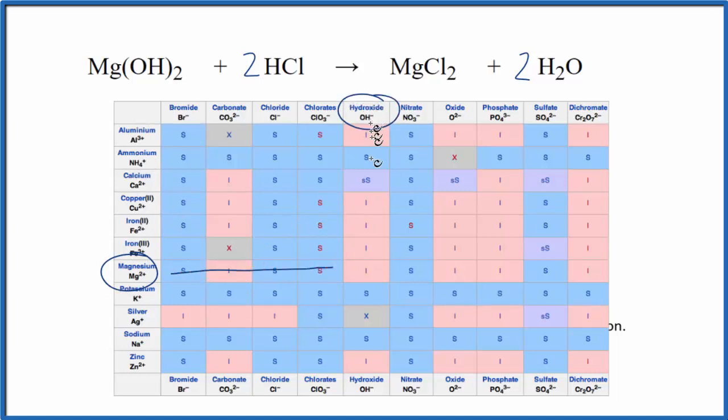So we'll go over and down on our table, and that I there, that means it's insoluble. It's not going to dissolve in water, it's going to be a solid. So the state for the magnesium hydroxide in our net ionic equation, that's going to be a solid.